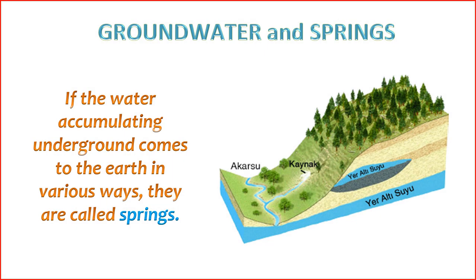A water spring is a natural discharge point where groundwater emerges at the Earth's surface. Springs are a result of the movement of underground water through permeable rocks, fractures, or other geological formations until it reaches the land surface. When the groundwater pressure is sufficient, it forces water to flow out, creating a visible spring.